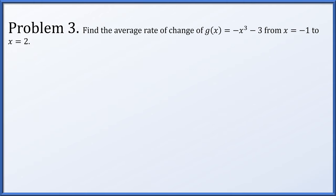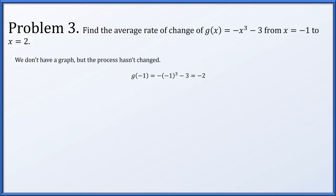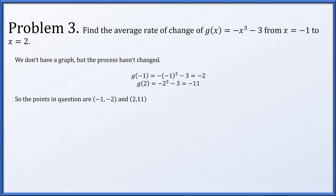Next, find the average rate of change of g(x) = -x³ - 3 from x = -1 to x = 2. We don't have a graph, but the process doesn't change. We plug in x = -1 and compute g(-1) = -2. We plug in x = 2 and compute g(2) = -11. The average rate of change — the slope of the line connecting (-1, -2) and (2, -11) — works out to be -3.